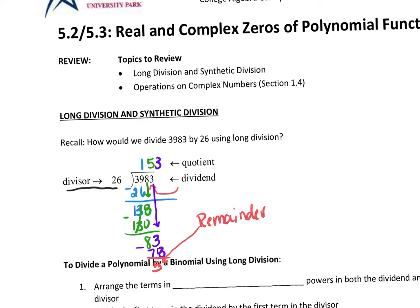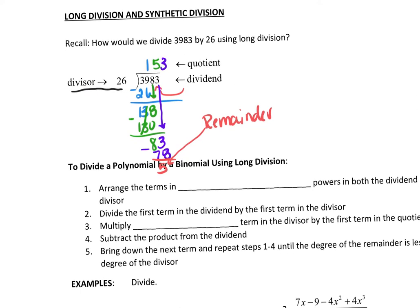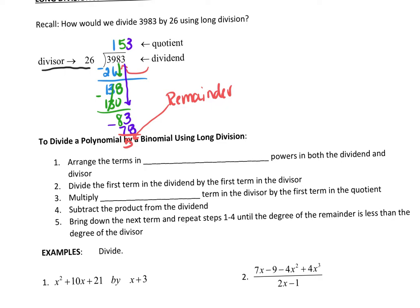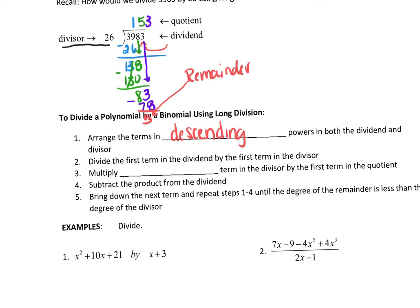Just like that process of long division in general, we're going to use this exact same process to do polynomial division. You're going to arrange the terms in descending powers — meaning from biggest to smallest — in both the dividend and divisor. Divide the first term of the dividend by the first term of the divisor, then multiply, subtract, bring down the next term, and repeat the process.